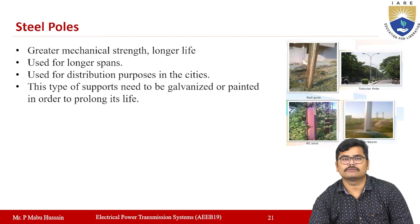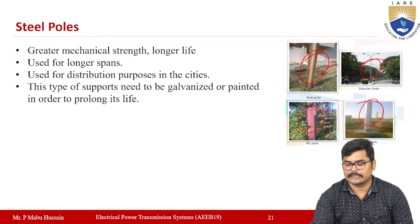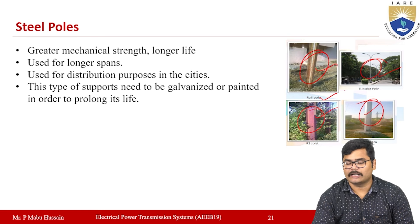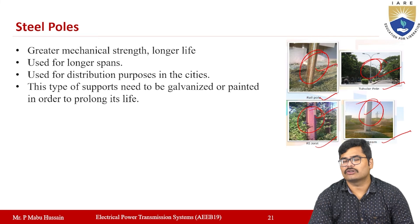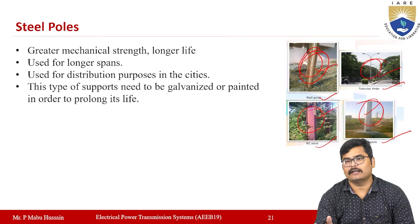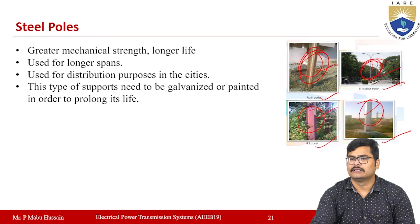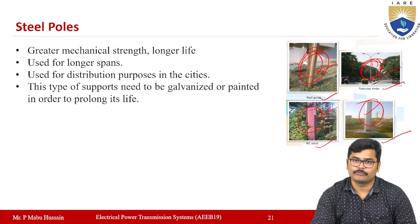Because of these drawbacks, we use steel poles. Depending upon the structure, steel poles may be called rail poles, tubular poles, H-beam poles, or RS joint poles. Steel poles have greater mechanical strength and longer life compared to wooden poles, and can be used for longer spans. They are mainly used in urban distribution in cities.